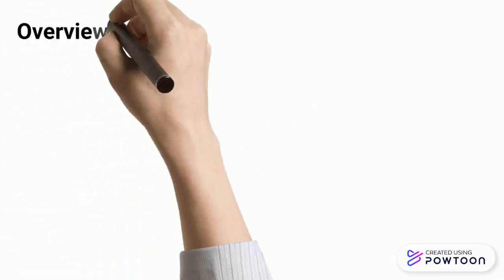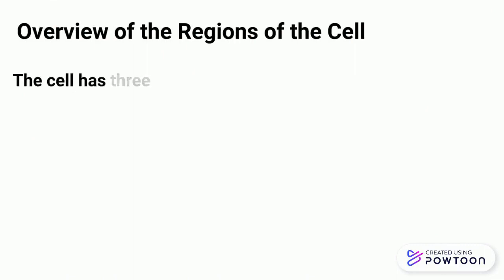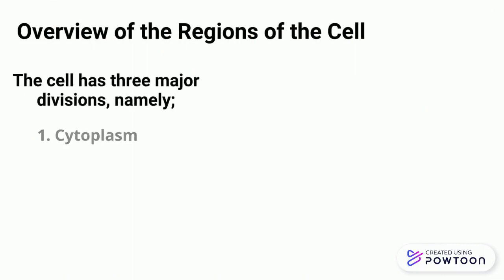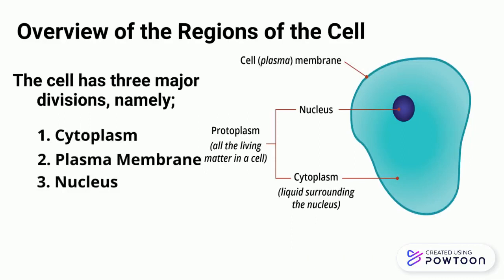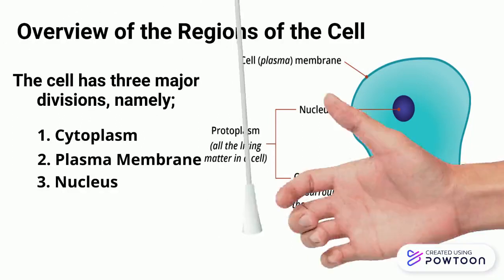Overview of the regions of the cell. The cell has 3 major divisions: namely, number 1, cytoplasm; cell wall; and the nucleus. These are the 3 major divisions of the cell.